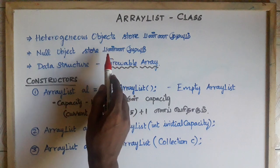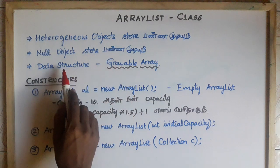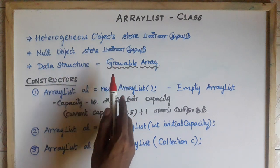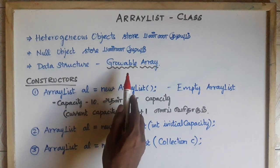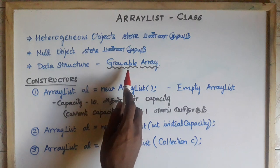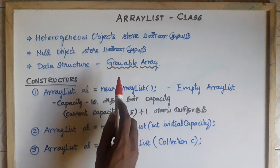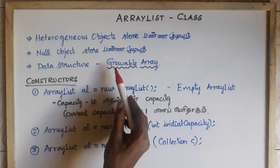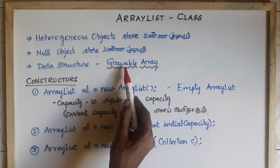In the ArrayList, the underlying data structure is a growable array. The ArrayList has fixed initial memory but it is a growable array.